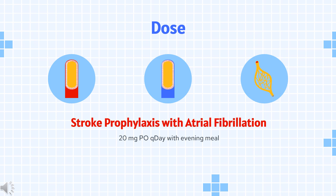Reduction in risk of recurrence of DVT or PE: Indicated for reduction in risk of recurrence of DVT and/or PE in patients at continued risk for recurrent DVT and PE after completion of initial treatment lasting at least 6 months. For CRCL ≥15 mL/min: 10 mg orally once daily, after at least 6 months of standard anticoagulant treatment. For CRCL <15 mL/min: avoid use.